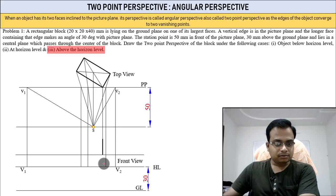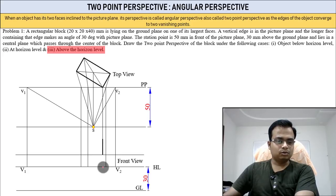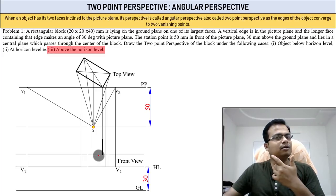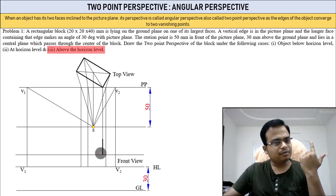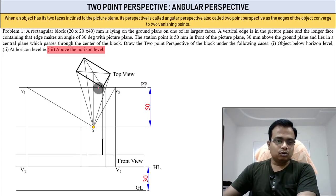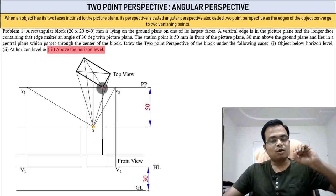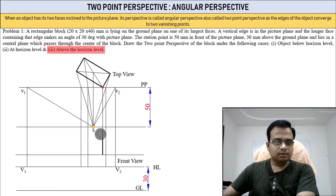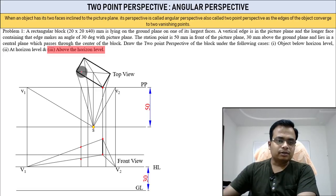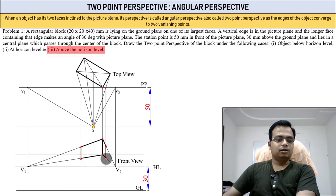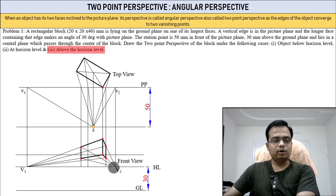Case three — this is above the horizon. Pick some random distance — let's take about 10 millimeters — that's the true length shown. Now join these two points with V2 and V1. You get this point, this point, and then connect them like this.